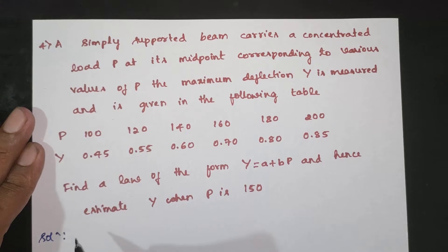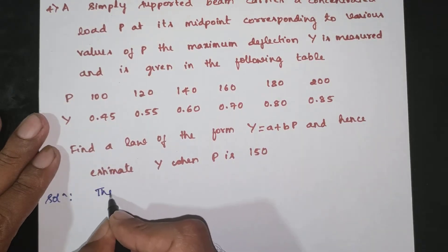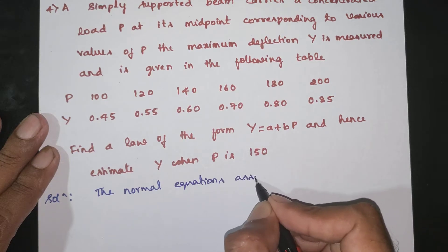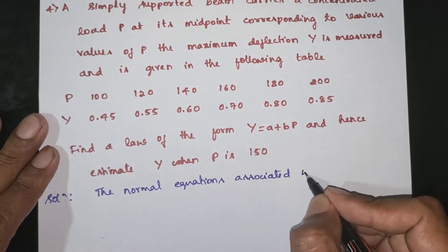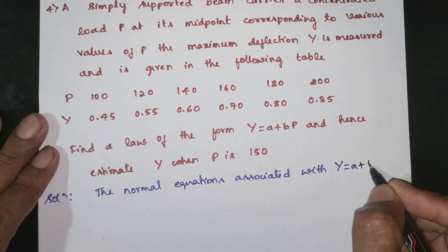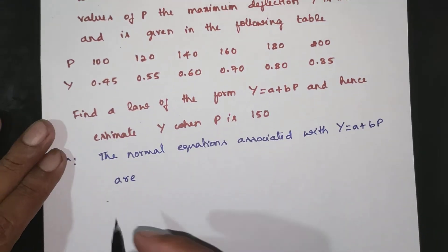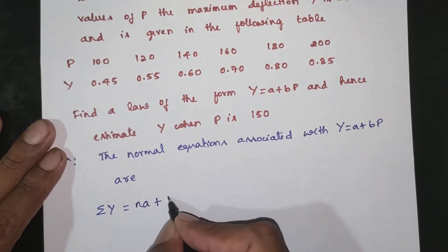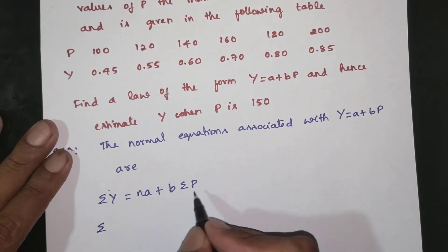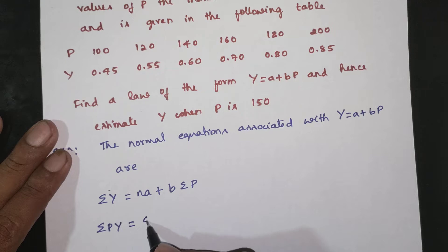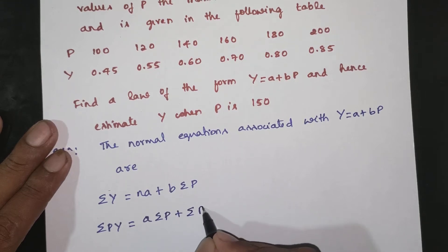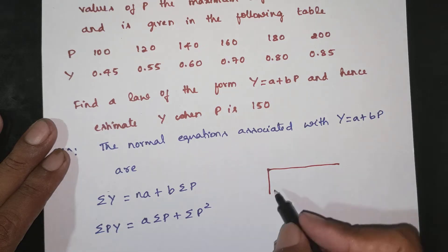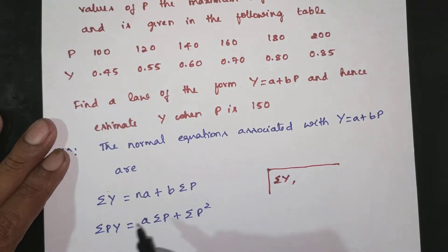This is the law of the form. The normal equations associated with Y equal to A plus BP are: summation of Y is equal to nA plus B times summation of P, and summation of PY is equal to A times summation of P plus B times summation of P squared.